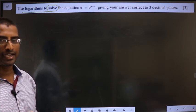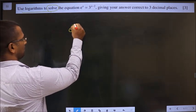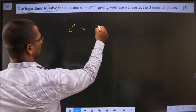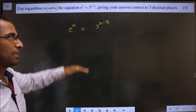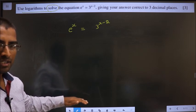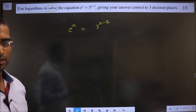First, we write the given equation. The given equation is e power x is equal to 3 power x minus 2. We simplify that will result in the value for x. Now how do we simplify is what we need to think.